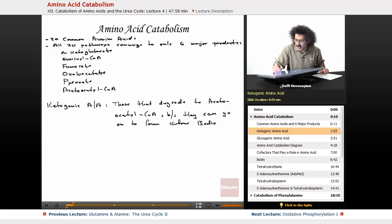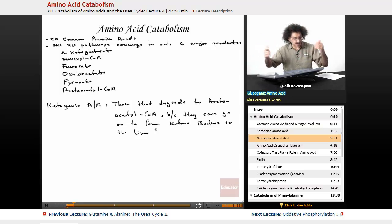We're going to go on to form ketone bodies. Remember when we discussed ketone bodies earlier? Ketone bodies in the liver. So those are called ketogenic amino acids. They tend to ultimately produce ketone bodies.